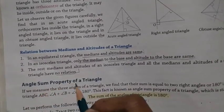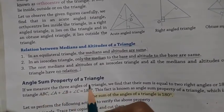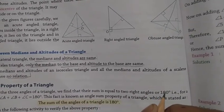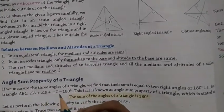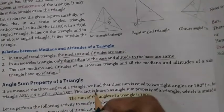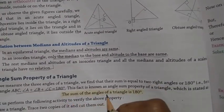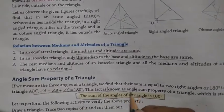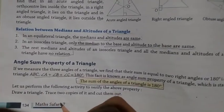Angle sum property of a triangle: If we measure the three angles of a triangle, we find that their sum is equal to two right angles, or 180 degrees. That is, for triangle ABC: angle A plus angle B plus angle C is equal to 180 degrees. This fact is known as the angle sum property of a triangle.